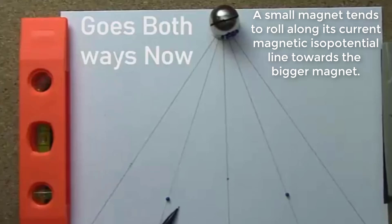A small magnet tends to roll along its current magnetic isopotential line towards the bigger magnet.